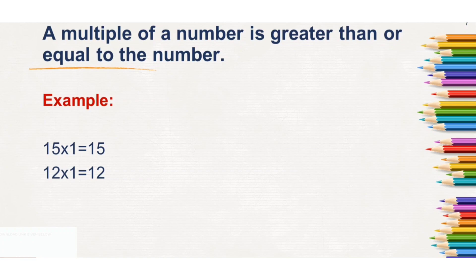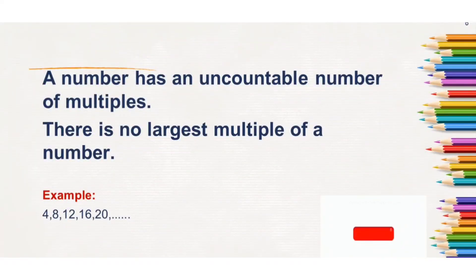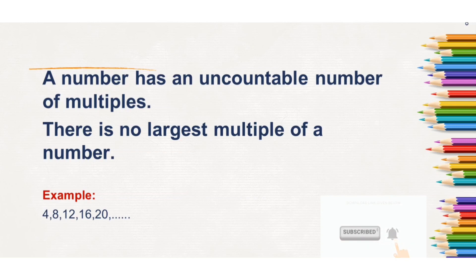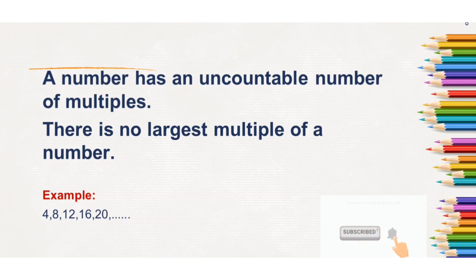The fourth property: a number has an uncountable number of multiples. There is no largest multiple of a number. You can go on saying the multiples of any given number. For example, the multiples of 4 are 4, 8, 12, 16, 20, 24, 28 — and so on. Numbers are infinite, so there is no largest multiple of any number.